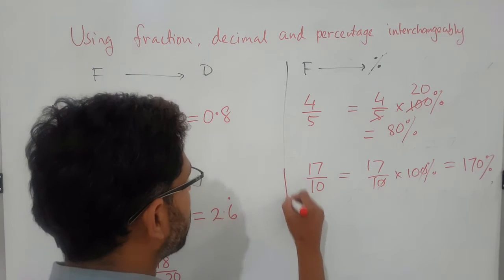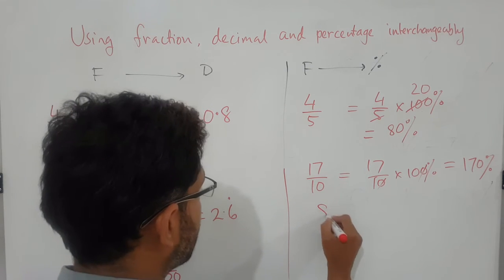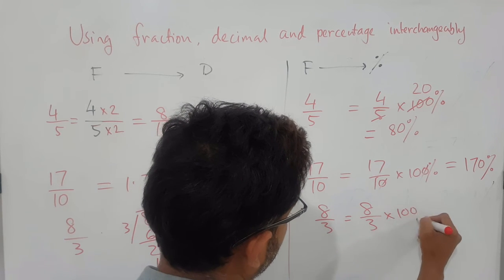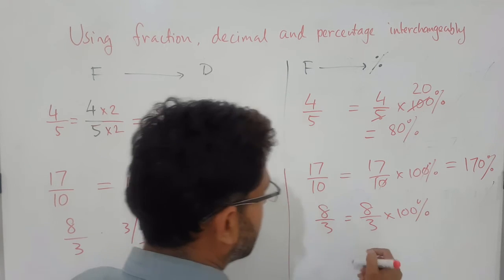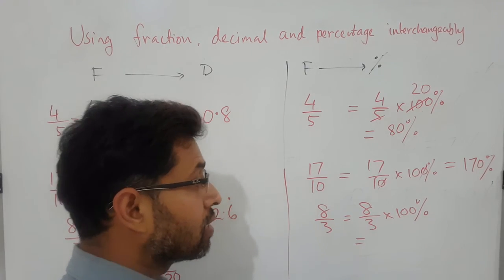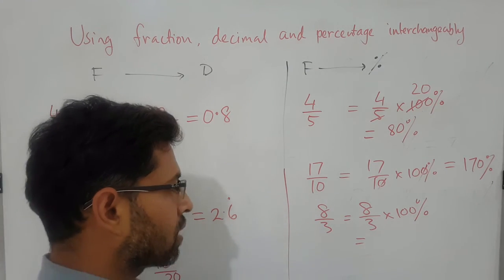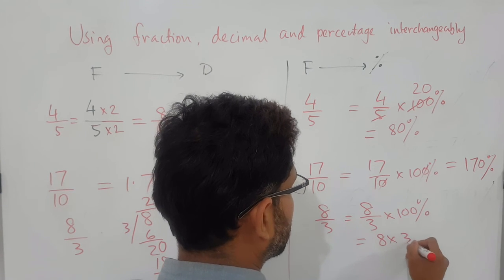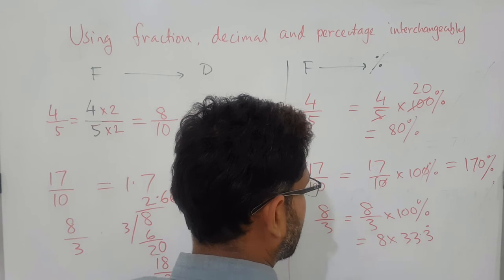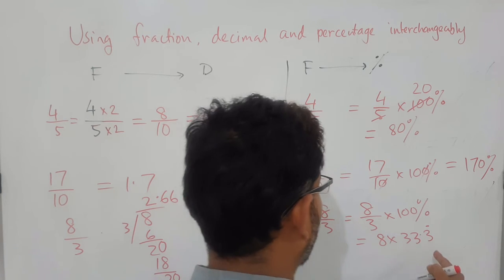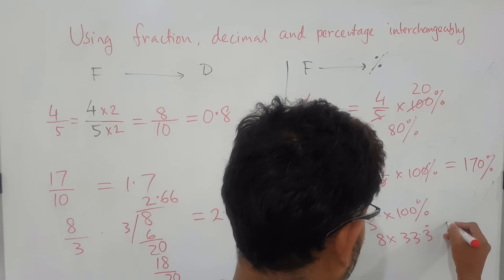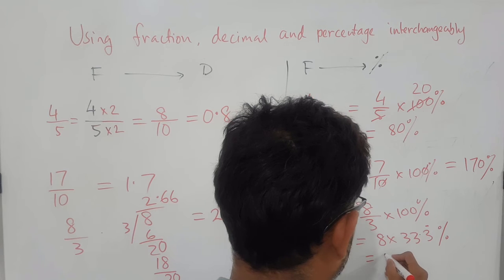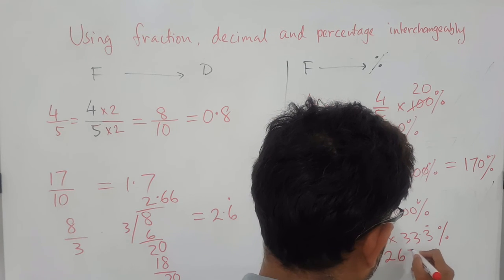If I ask you to convert that to percentage, then it would be 8 over 3 equals 8 over 3 times 100 percent, and then basically you are dividing 100 over 3, which is 33.333, something like that, so it is basically 8 times 33.33 recurring, so if you multiply that, it will be 267 percent.